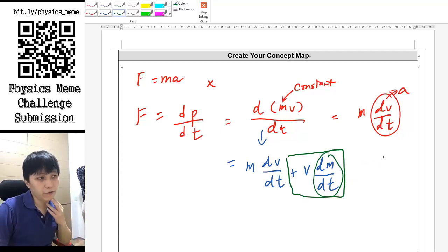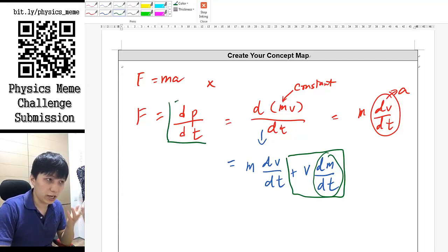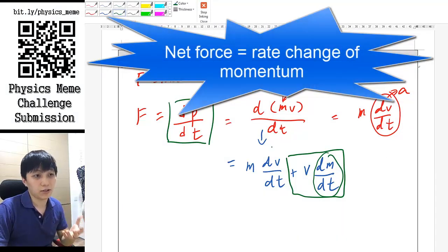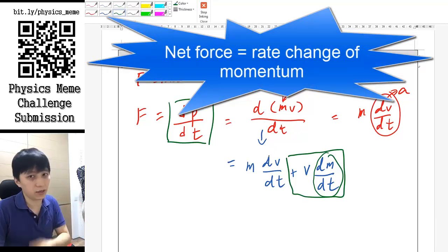So if you want a better definition of net force according to Newton's second law, then you should say d is the rate change of momentum, instead of mass times acceleration.